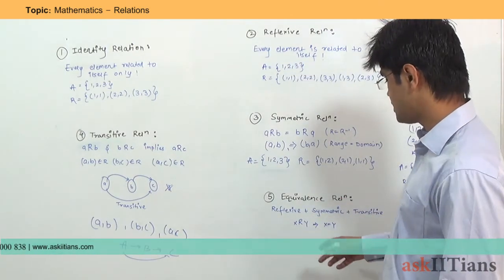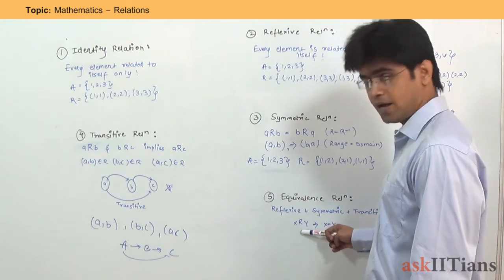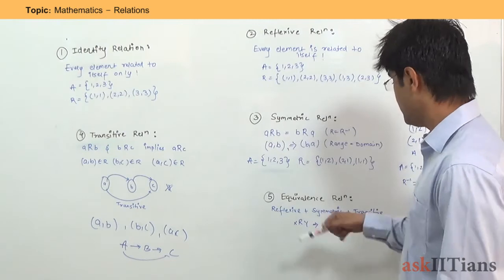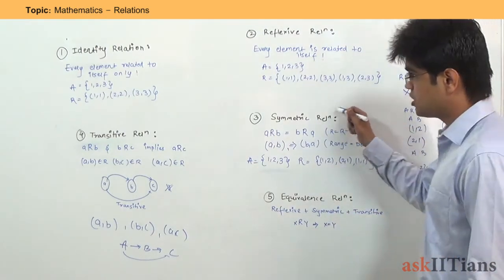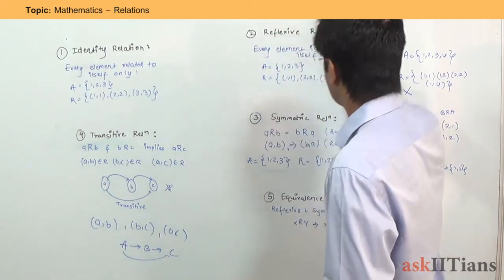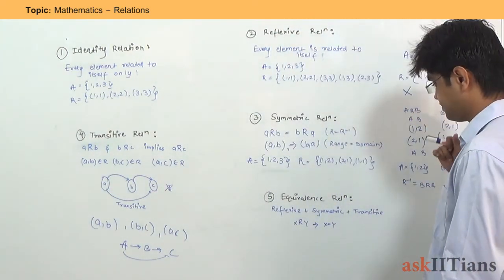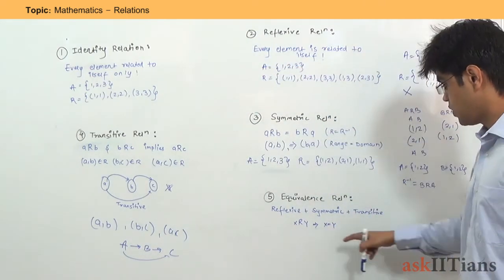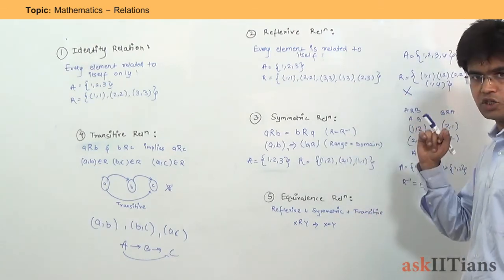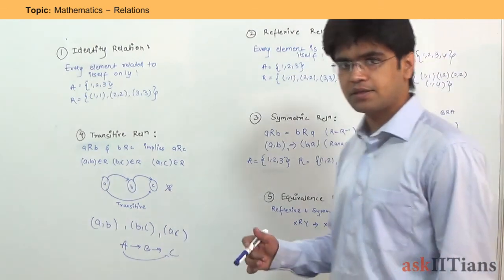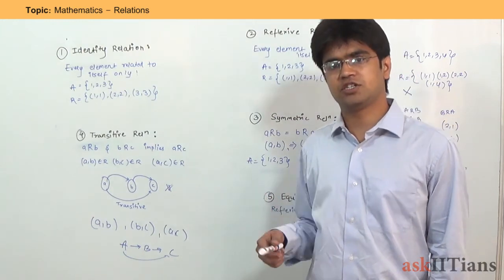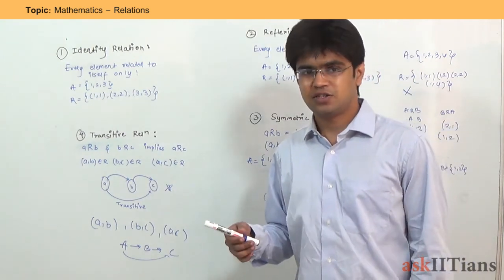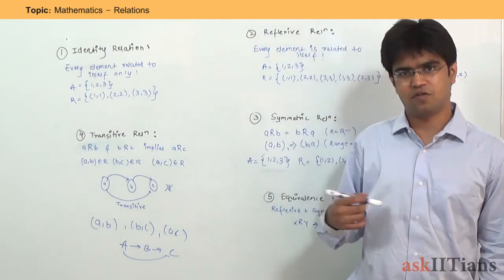An example of an Equivalence Relation: suppose there is a relation between x and y where x equals y. This means Identity Relation is an Equivalence Relation as well, because it is Reflexive, Symmetric, and Transitive. So x equal to y — that means Identity Relation is an equivalence relation. This is it for Relations — these are the major types. The next topic we are going to study is Functions. Stay tuned and keep watching for more videos. Thank you.